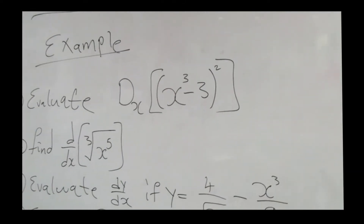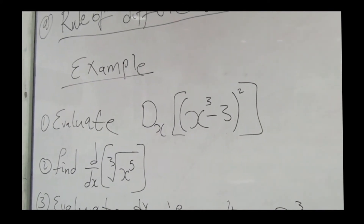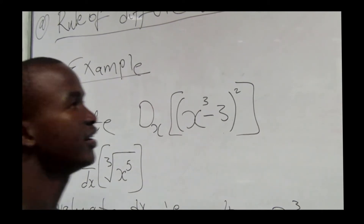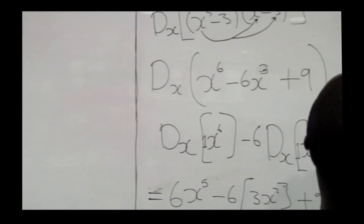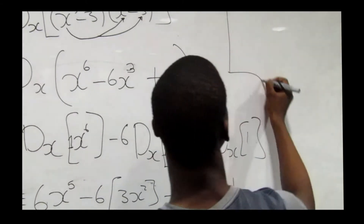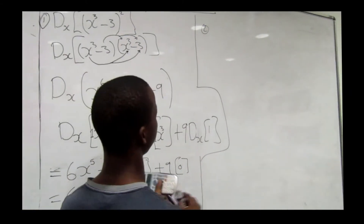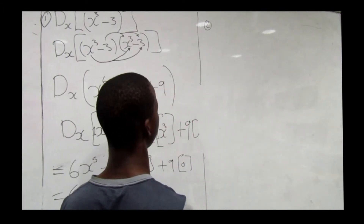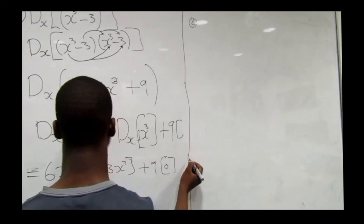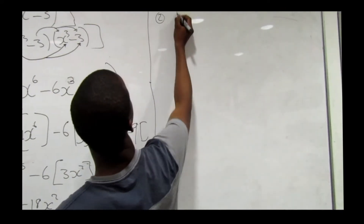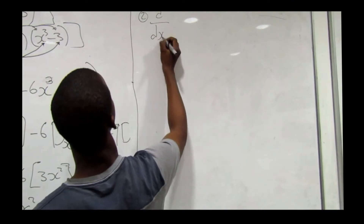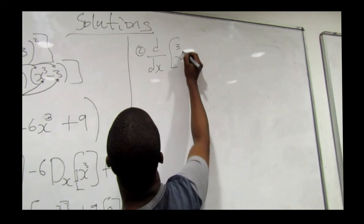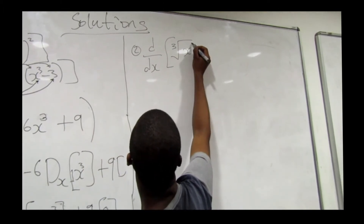Number two: find dy/dx given d/dx of the cube root of x to the power 5. Let me write the question here: d/dx of the cube root of x to the power 5.